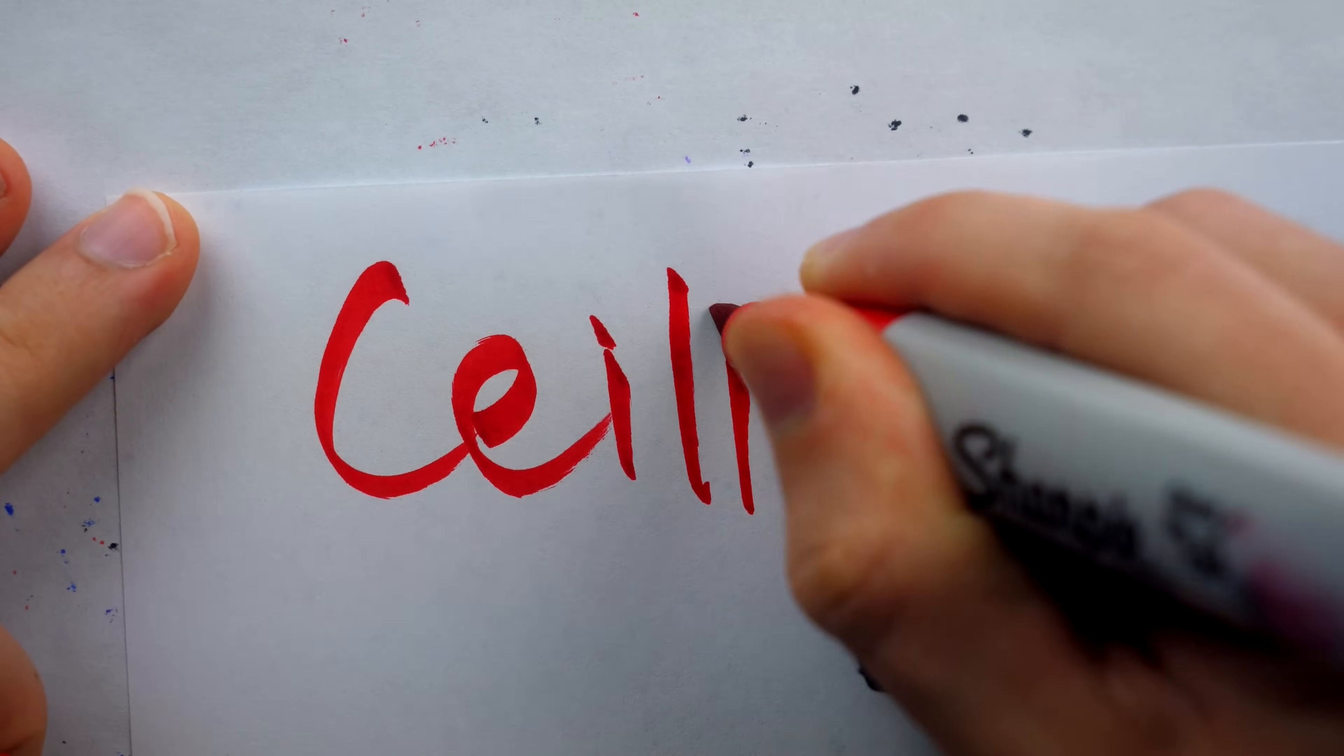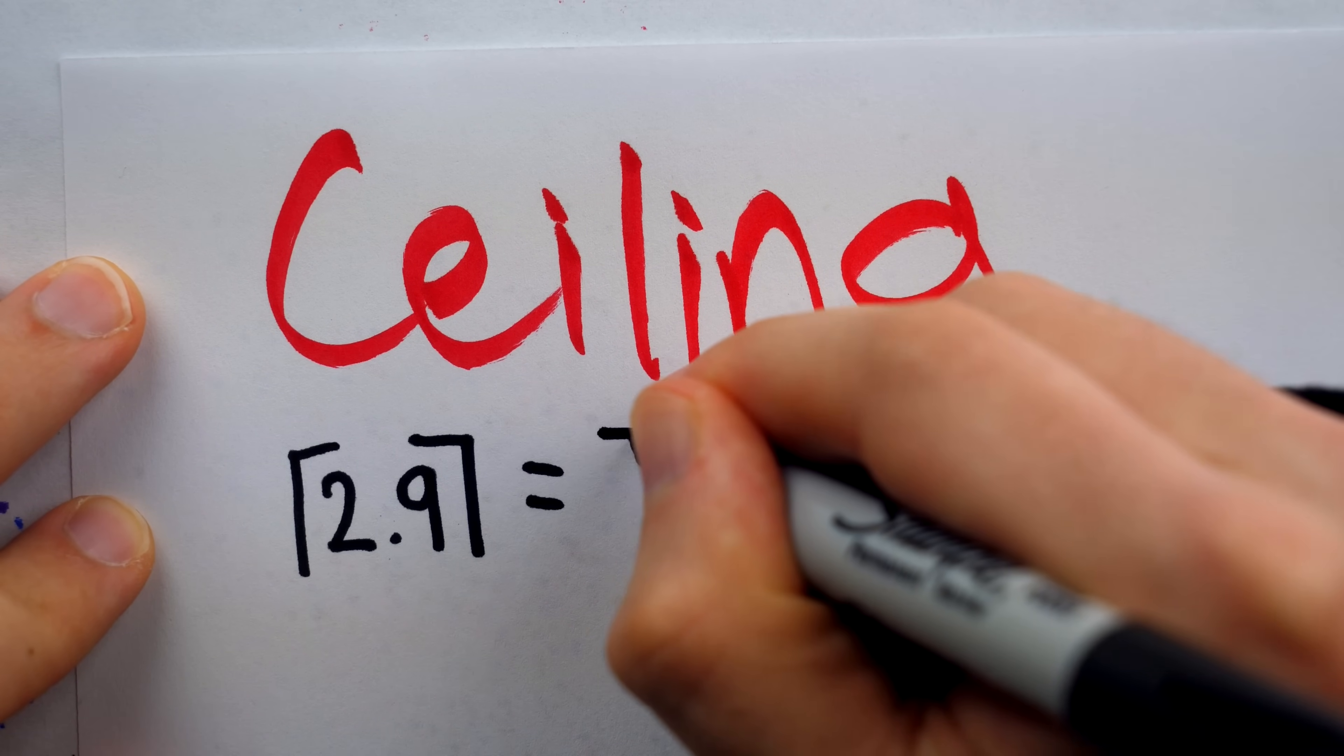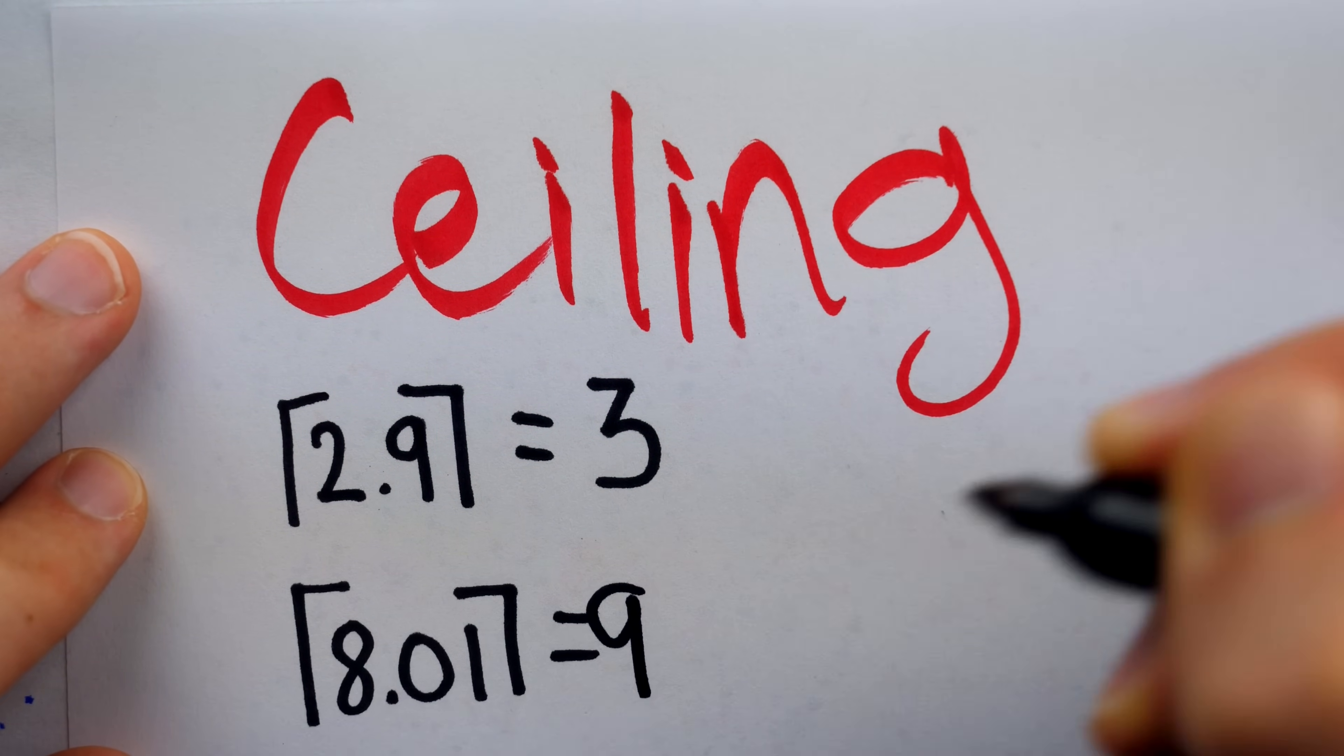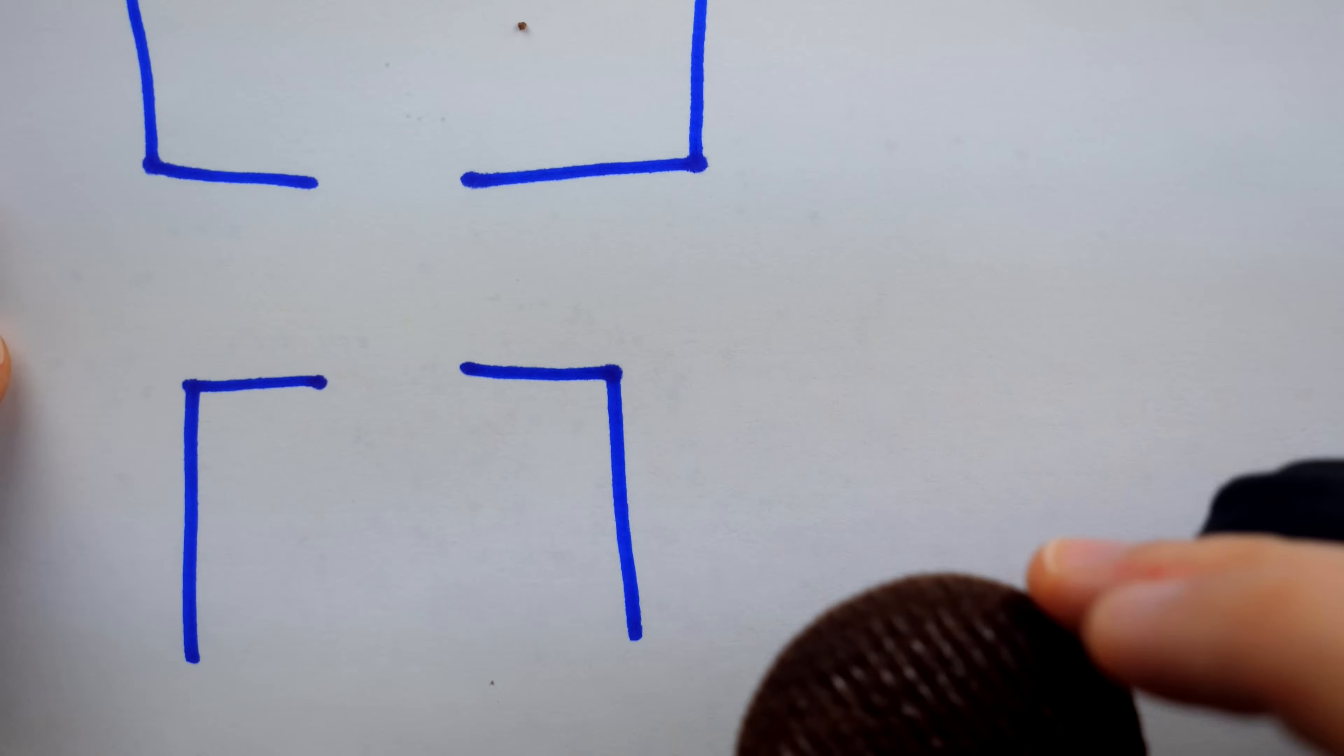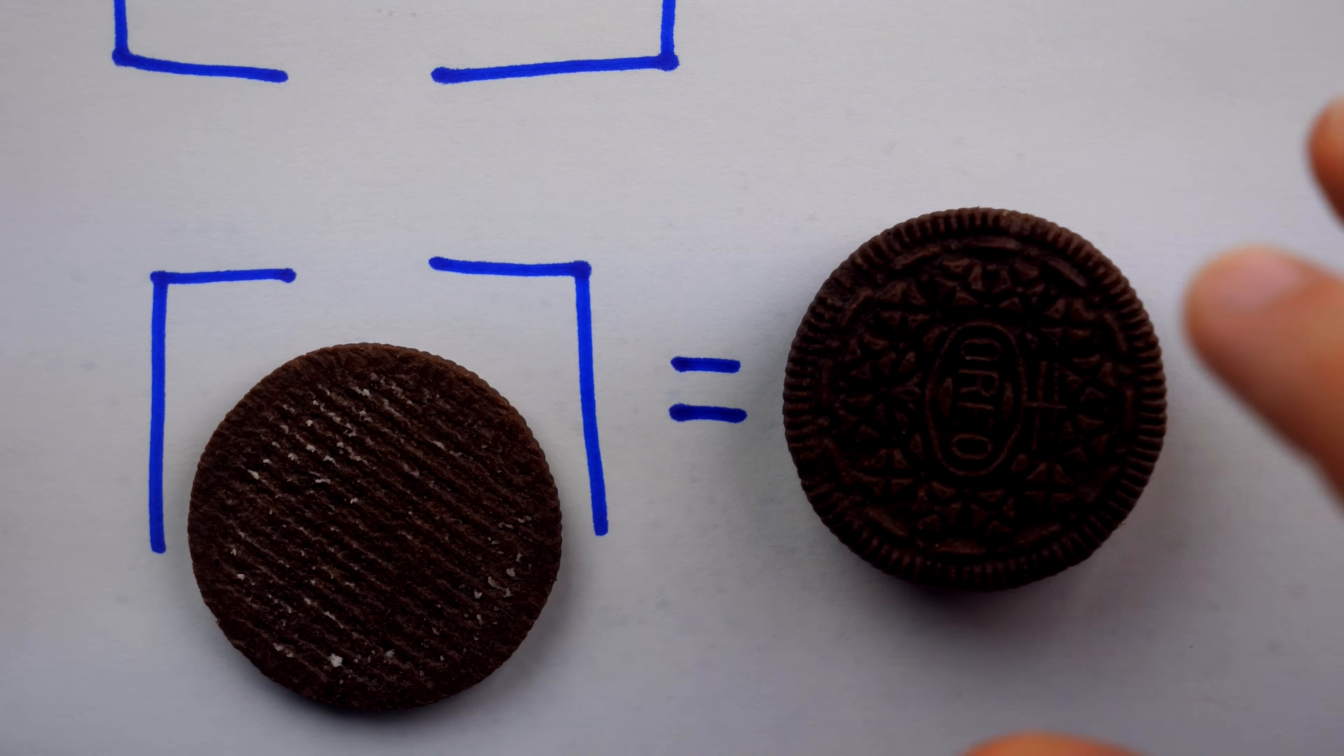Unsurprisingly, another way we can round is with what's called the ceiling function. The ceiling function brings a decimal up to the nearest integer, filling in the missing part, so to speak. The ceiling of 2.9 is equal to 3, and the ceiling of 8.01 is equal to 9. It just rounds it up. It's like this part of an Oreo cookie. The floor function would round it down to zero Oreo cookies, taking away the fractional part. On the other hand, the ceiling would round it up, filling in the missing cream and cookie half to get one whole Oreo cookie.